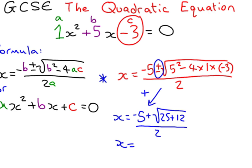So, for this answer, we're going to get minus 5, plus the square root of 37, divided by 2, and it gives us 0.541.